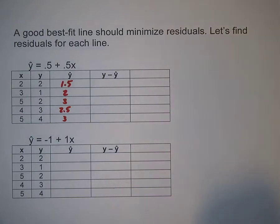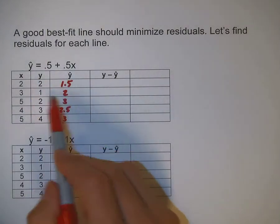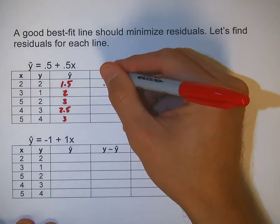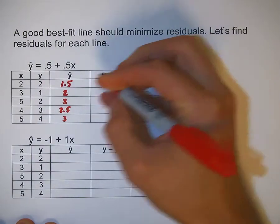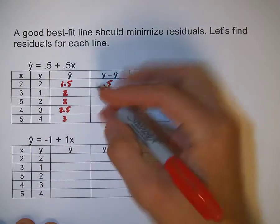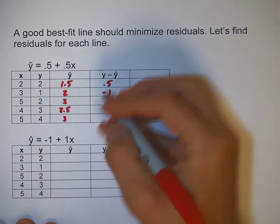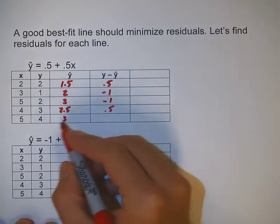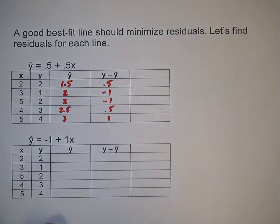Now for my y minus y-hat values, I just need to subtract y minus y-hat. So 2 minus 1.5 is 0.5. 1 minus 2 is negative 1. 2 minus 3 is negative 1. 3 minus 2.5 is 0.5. 4 minus 3 is 1.